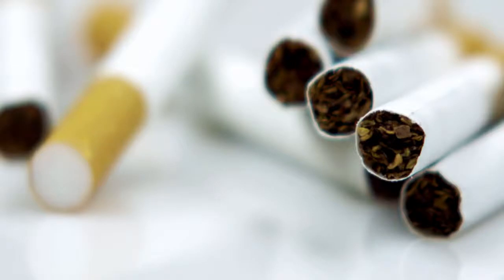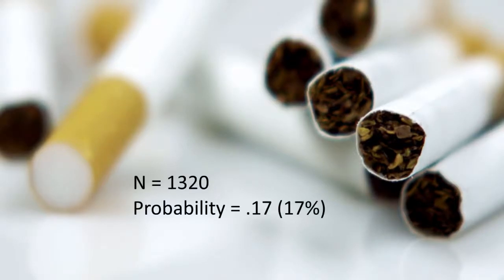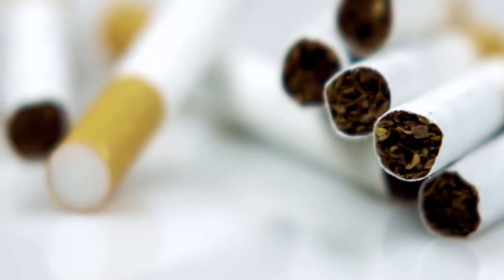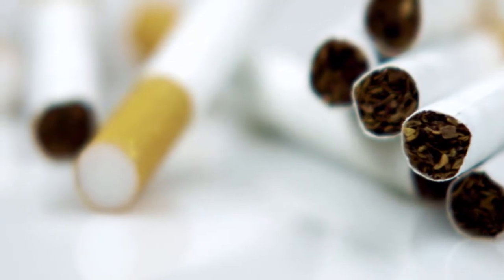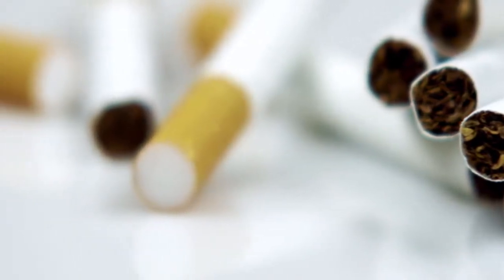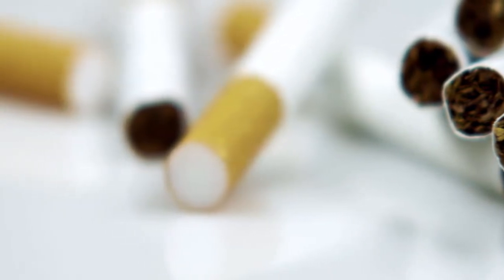The null hypothesis is generally assumed to be true until evidence indicates otherwise. The probability that we will get a difference of this size in the mean number of cigarettes smoked in a random sample of 1,320 participants is roughly 0.17, or 17%. We will talk about how this gets calculated for the different statistical tests later. The important point at this stage is that it is this kind of evidence that we will be considering every time we decide to accept or reject the null hypothesis.